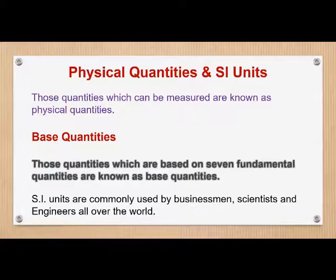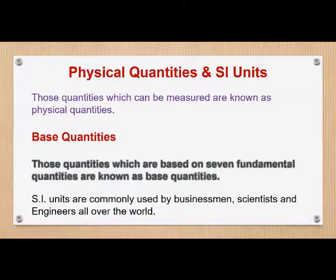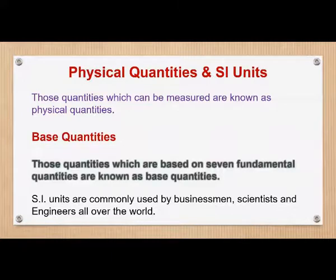In physics, we have many physical quantities — scalar quantities, vector quantities. In this lesson, we are going to talk about base quantities and derived quantities. Those quantities which can be measured are known as physical quantities. In 1960, there was a meeting in France where they decided on a single system for the world, called the SI system. SI is an abbreviation for the French 'Système International d'Unités.'